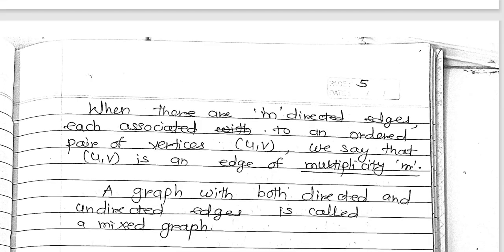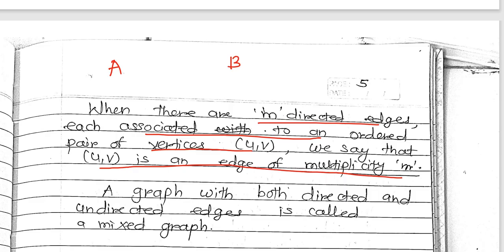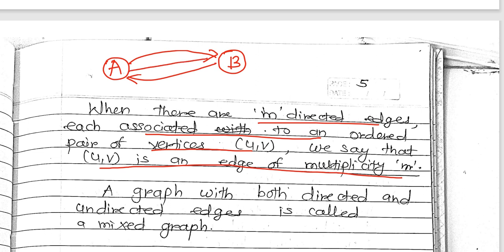When there are m directed edges each associated with an ordered pair of vertices u-v, we say that u-v has a multiplicity of m. For example, if there are two vertices A and B with three directed edges between them, the multiplicity is three.